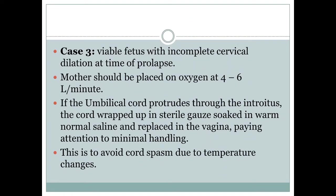Case 3: Cord prolapse with a viable fetus but with incomplete cervical dilatation at the time of prolapse. The mother should be placed on oxygen at 4–6 liters per minute. If the umbilical cord protrudes through the introitus, the cord is wrapped in sterile gauze soaked in warm normal saline and replaced back into the vagina. This is to avoid temperature changes in the cord which can lead to cord spasm and eventually compromise the blood supply to the fetus. Minimal handling of the cord is essential, as excessive handling can also lead to cord spasm.